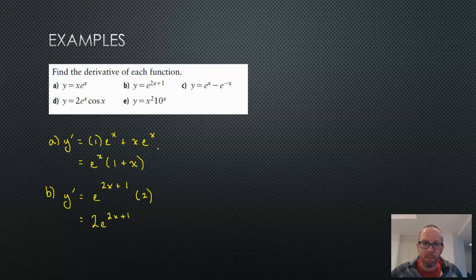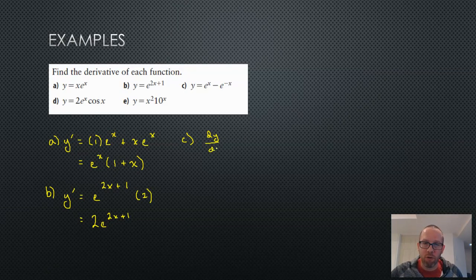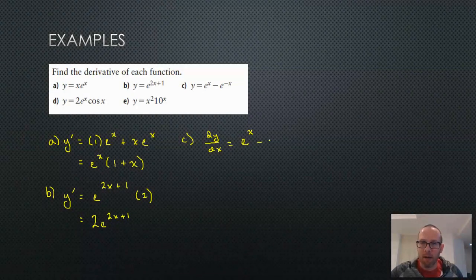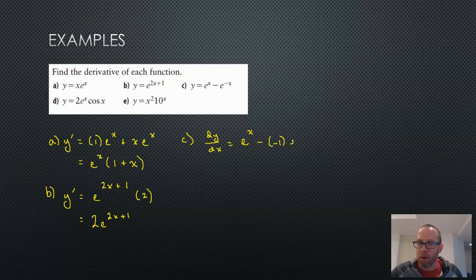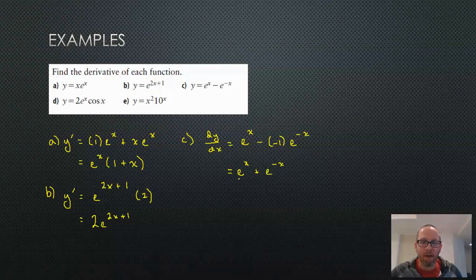For part C, we just have a difference of two functions. dy/dx: the derivative of the first, e to the power of x, is itself. Minus the derivative of e to the power of negative x, which is e to the power of negative x times negative 1, the derivative of the function in the exponent. And what we're left with is e to the x plus e to the power of negative x.